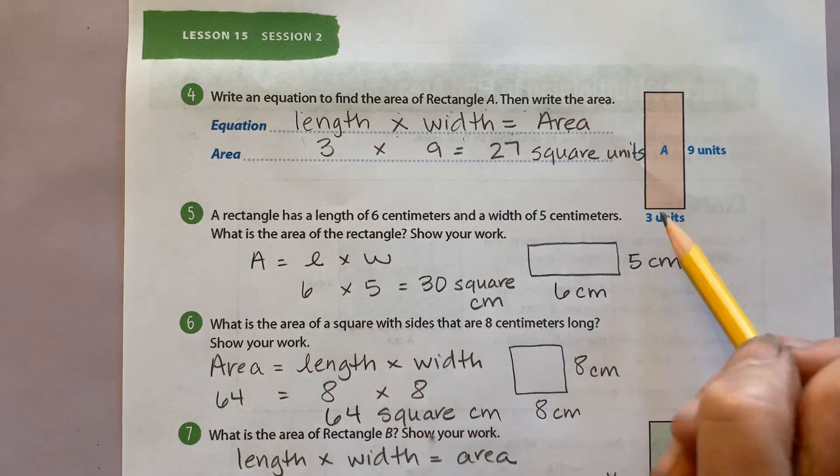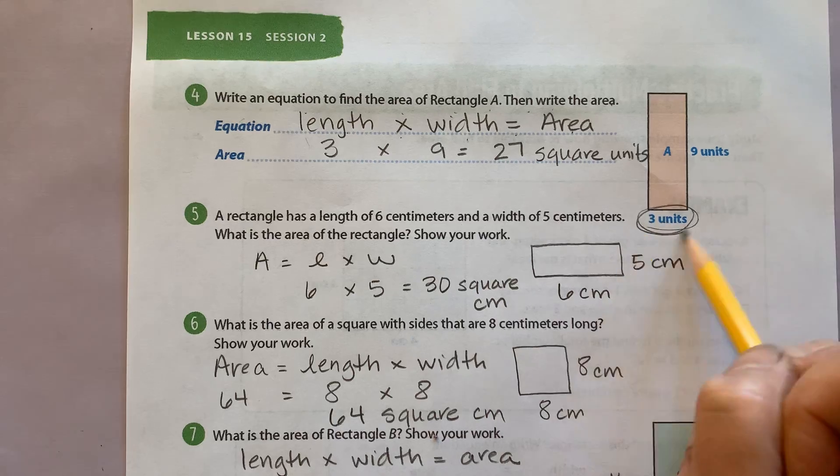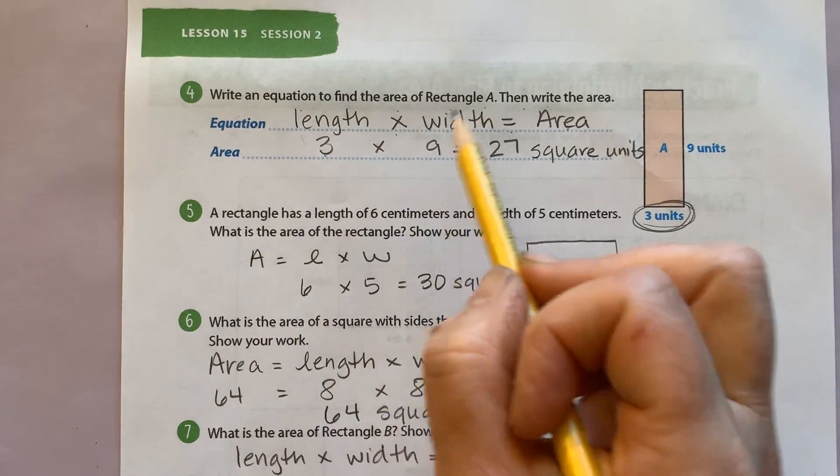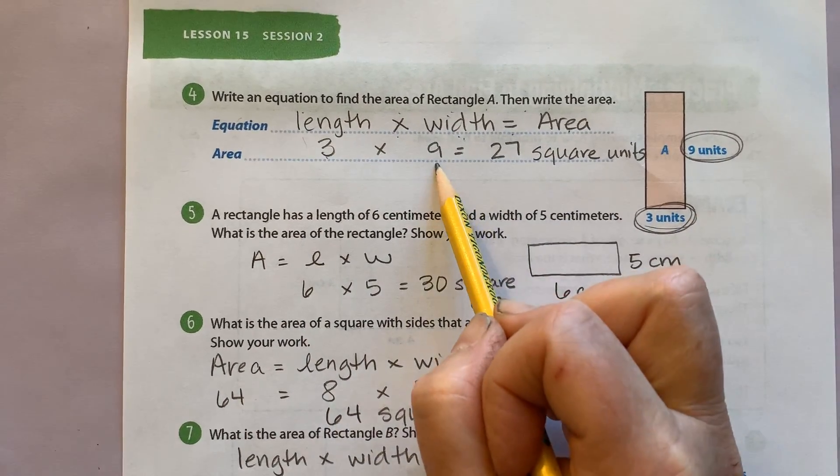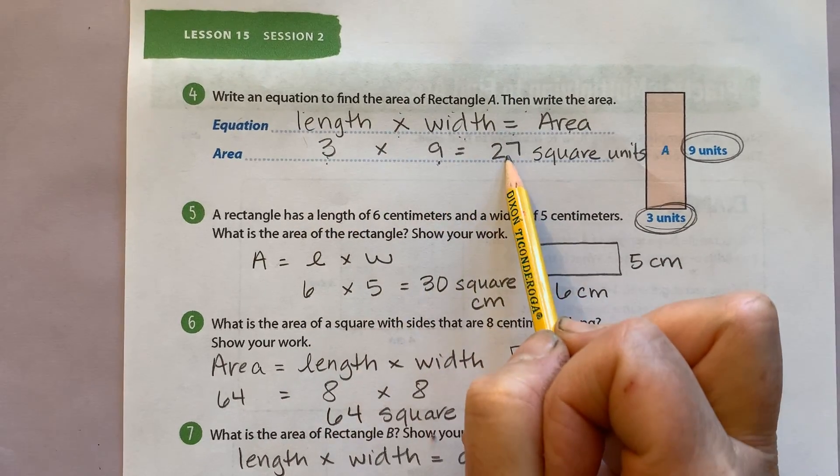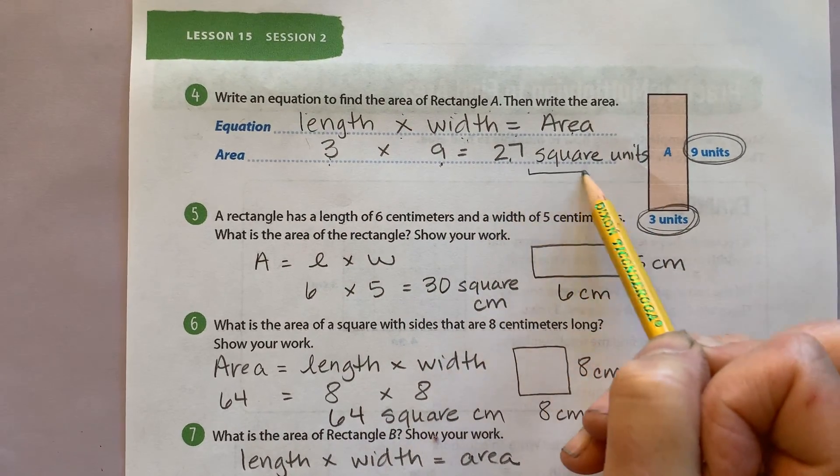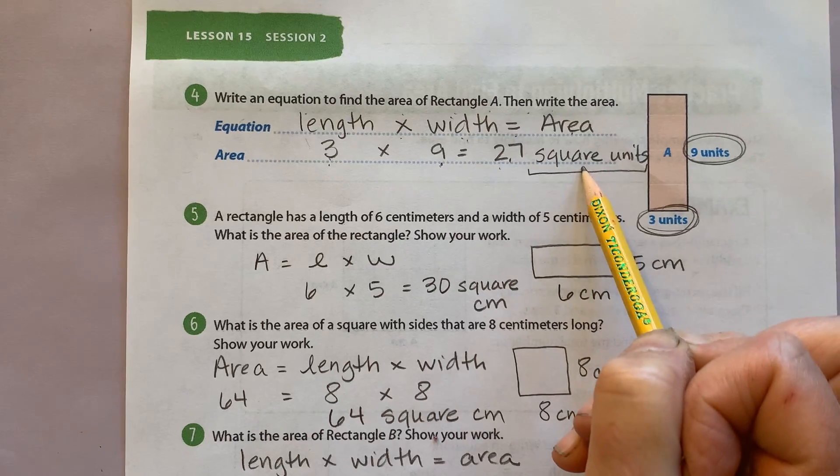So then I substituted my numbers in. My length is 3, so I plug in 3. My width is 9, so I plug in 9. And 3 times 9 is 27. And make sure you have no naked numbers. 27 square units.